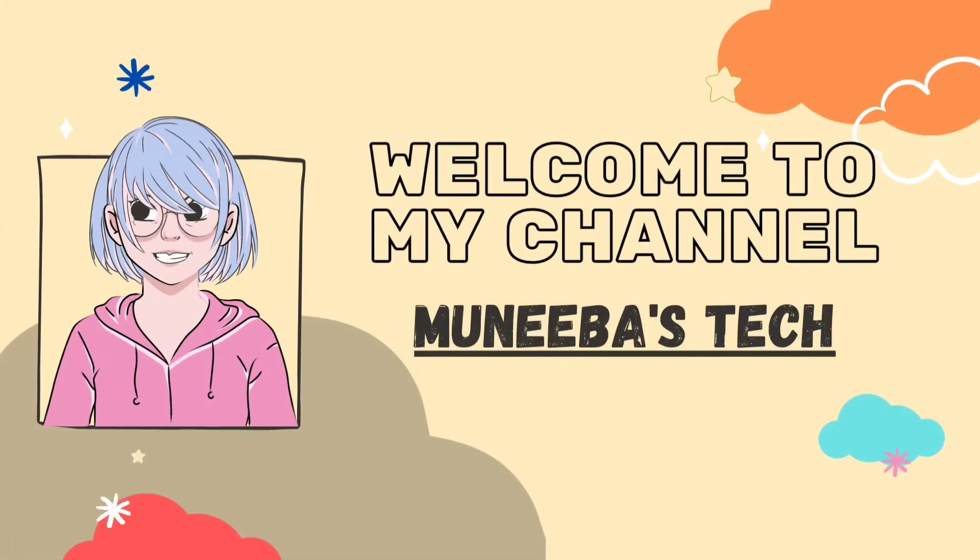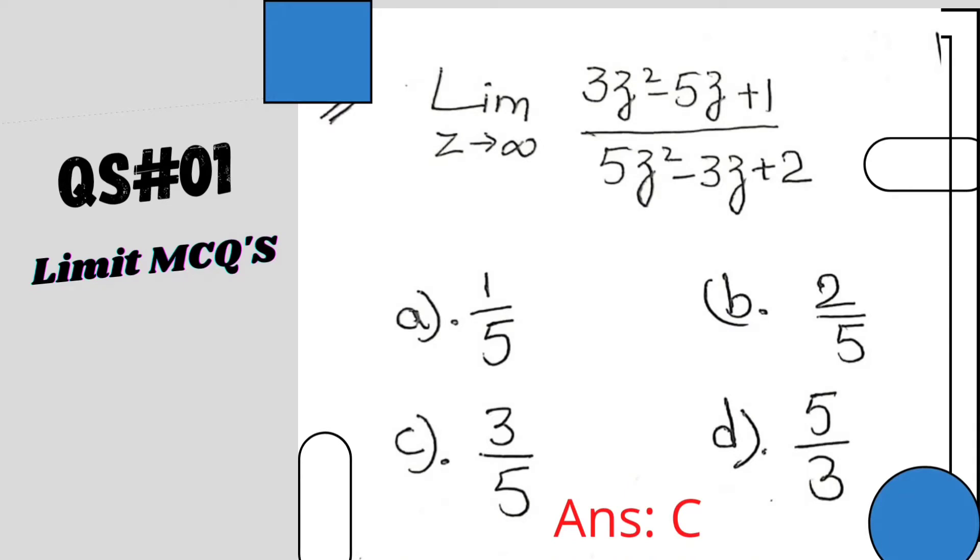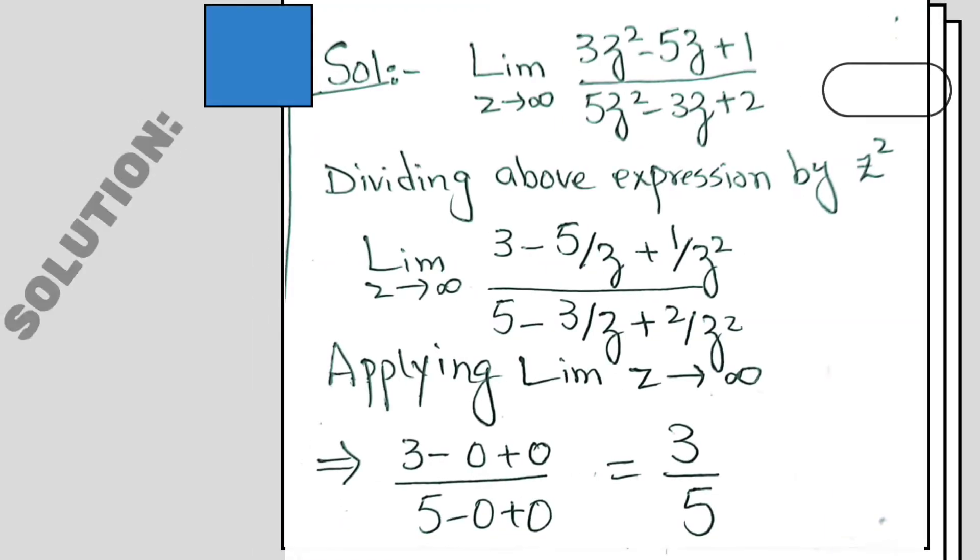Assalamu alaikum everyone, welcome to my channel Money Balls. Let's start the video. Question number one: limit as z approaches infinity for the given expression. We can check the answer is 3 over 5.